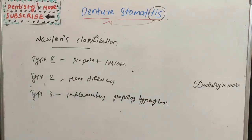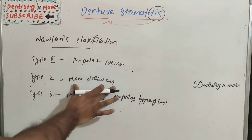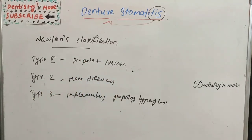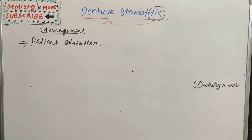To summarize the classification: Type 1 is pinpoint lesions, Type 2 is more diffused lesions, and Type 3 is inflammatory papillary hyperplasia. Regarding diagnosis, it depends on clinical findings. In the presence of angular stomatitis or systemic lesions, further investigations are required such as blood picture, smears and culture, biopsy, or even HIV serology.